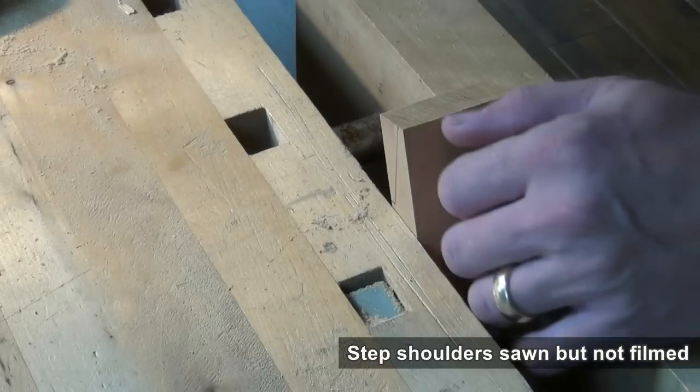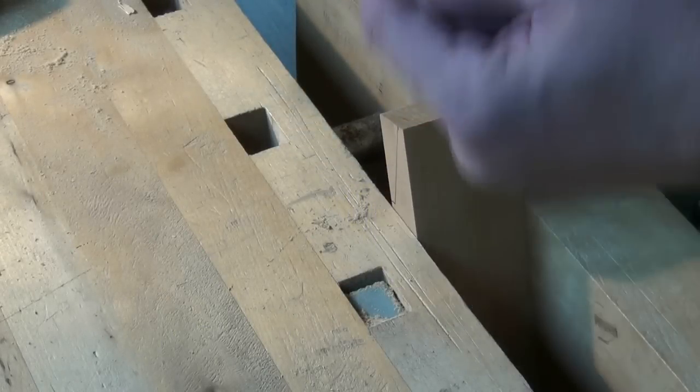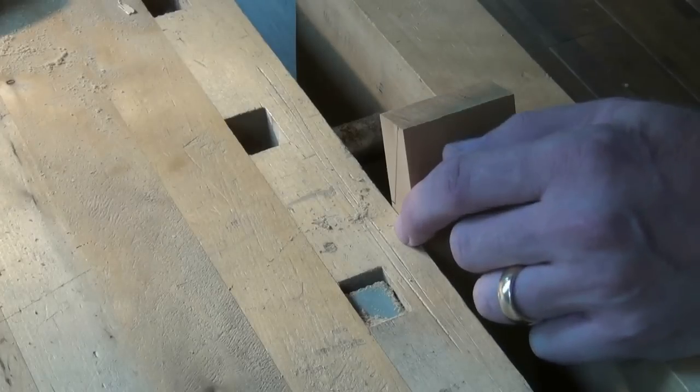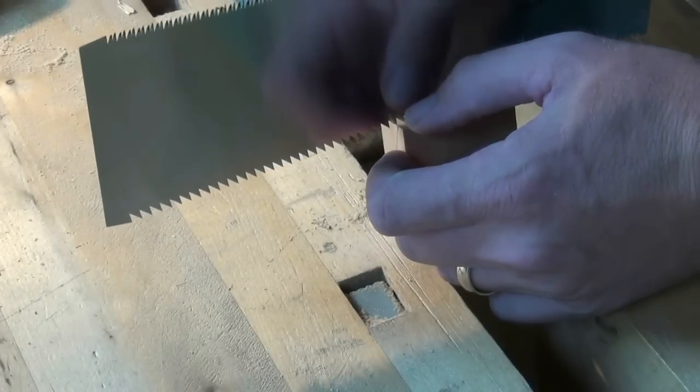With the workpiece clamped in your vise and the bevel line perpendicular to the bench, we can now cut down the bevel line and remove the little wedge.